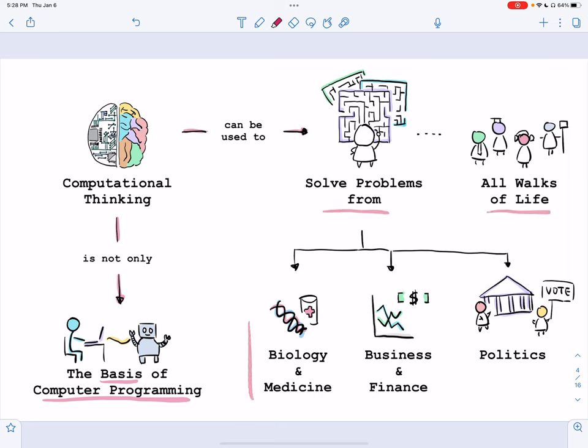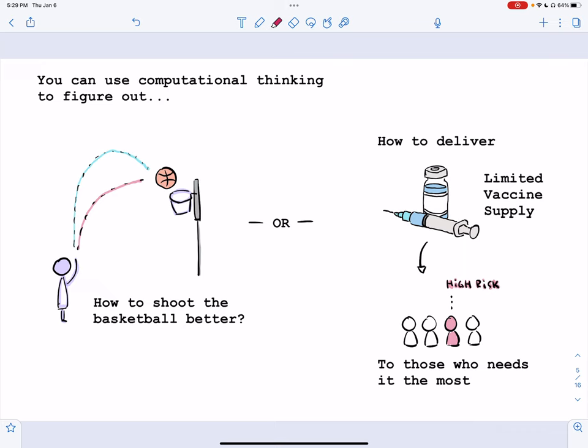Problems like from biology and medicine, from business and finance, even from the world of politics. You can use computational thinking to figure out how to shoot the basketball better, or how to deliver limited vaccine supplies to those who need it the most, or what we call the high-risk group.